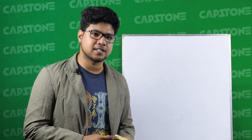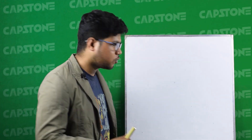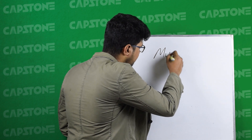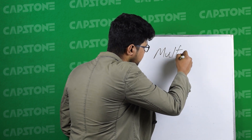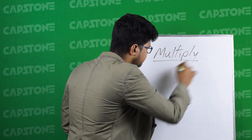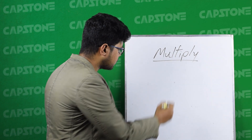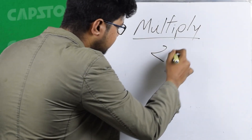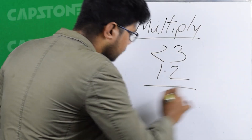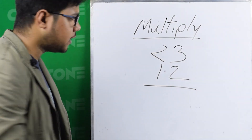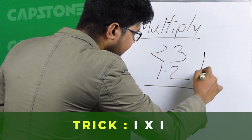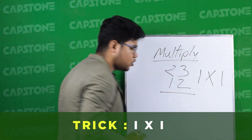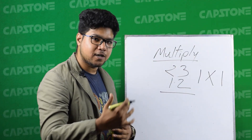This takes a lot of time, but we will learn a trick on the next step. So let's start. Now we will learn how to multiply. The trick is I x I. So this is our trick.